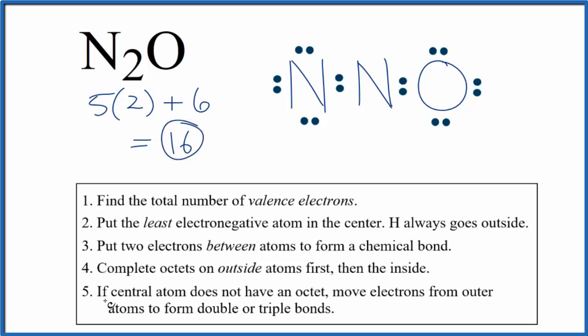So we're going to have to move some electrons to the central atom to form a double or triple bond. So let's move these here, and then these here. So this works. We have an octet on the nitrogen, this nitrogen here, and the oxygen. So this is a valid Lewis structure.